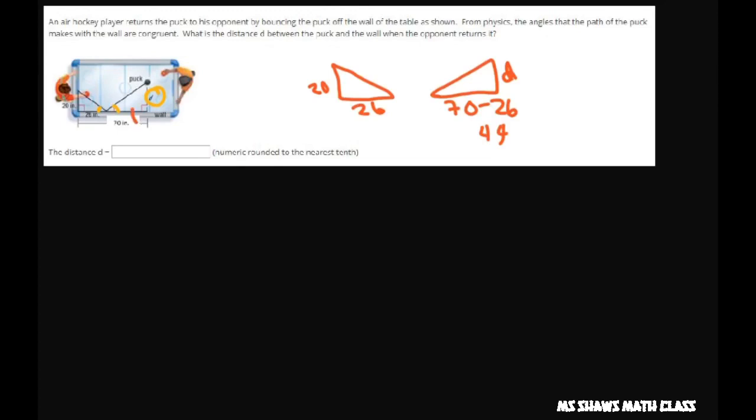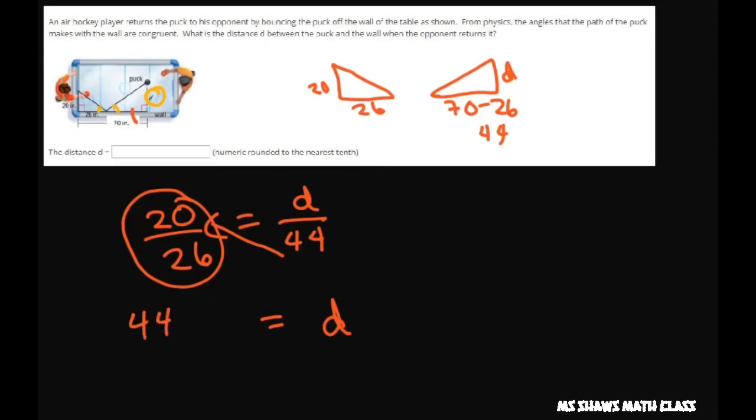So let's set up our proportion. We're going to say 20 is to 26 as D is to 44. And this should be written a little better, 26. If you reduce this, well let's just cross multiply. So we're going to get a decimal anyway.